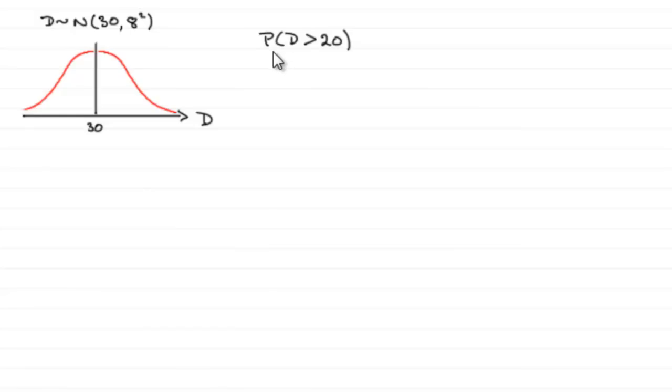And what we've got to do is work out the probability that D is greater than 20. Now what I'd always encourage you to do in any normal distribution question is to draw a sketch of your distribution.